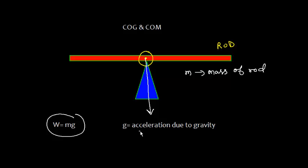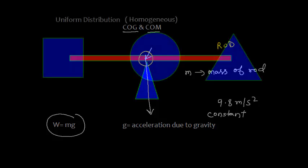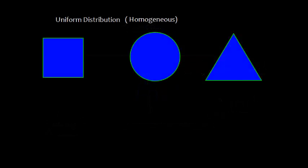And g is the acceleration due to gravity — the average value is 9.8 meters per second squared. However, this value keeps changing from one place to another. At the surface of the Earth, it can be considered constant for small distances. So the geometrical center of this rod means the center of gravity and center of mass are at the same point.